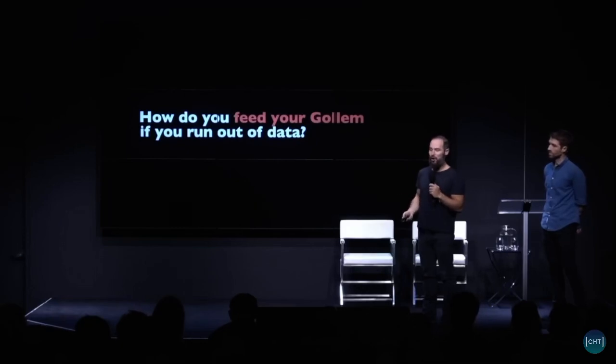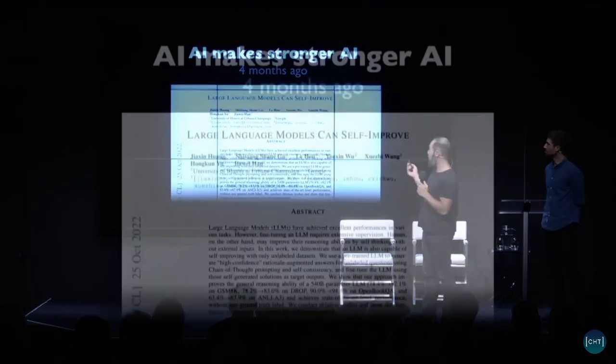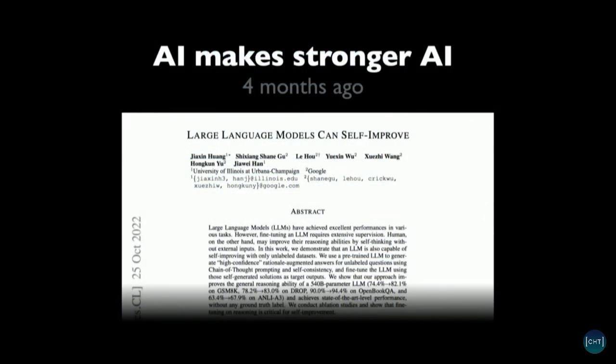So here's the question: how do you feed your model if you run out of data? Four months ago, the first paper showed that you've run out of data, but you have a model that can generate language — so why not use the model to generate more language to train on? It turned out that didn't work very well.